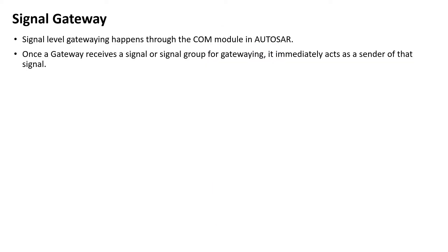First, let's discuss signal gateway. Signal-level gatewaying happens through the COM module in AUTOSAR. The COM module can gateway a signal or a signal group. The received signal or signal group can be mapped to a single or multiple transmit signals or signal groups. Once a gateway receives the signal or signal group for gatewaying, it immediately acts as a sender of that signal.